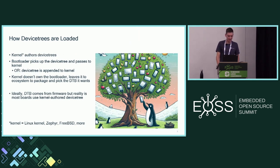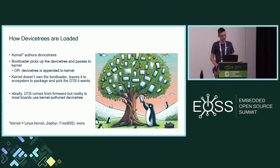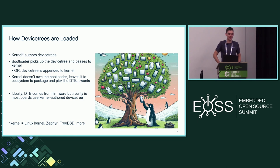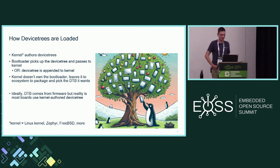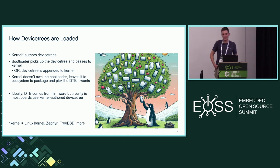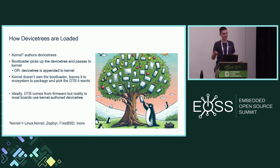Device trees are a way of describing hardware. The kernel authors these usually, though other folks like Zephyr, FreeBSD, and U-Boot do as well, with a lot of effort to consolidate that. Usually what happens is the bootloader picks up the device tree and passes it to the kernel, or sometimes the device tree is appended to the kernel if your bootloader doesn't support that. Generally, the kernel doesn't own the bootloader — it leaves it to the ecosystem to package and pick up the DTB it wants.